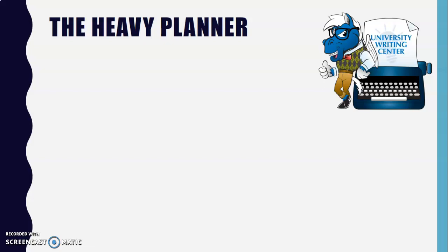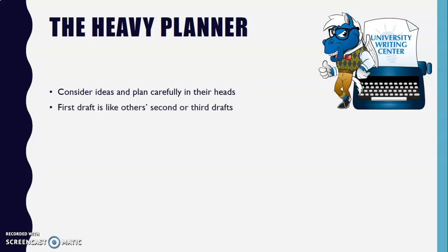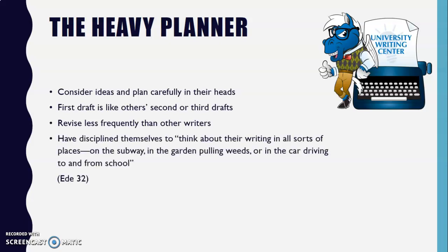The first type of writer is a heavy planner. These writers generally consider their ideas and plan their writing so carefully in their heads that their first drafts are often more like other writers' second or third drafts. As a consequence, they often revise less frequently than other writers. Many heavy planners have disciplined themselves so that they can think about their writing in all sorts of places — on the subway, in the garden pulling weeds, in the car driving to and from school, or in the case here at MTSU, waiting in line at Starbucks.